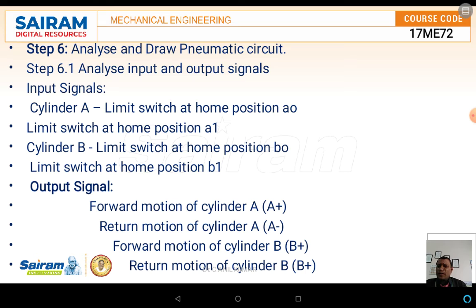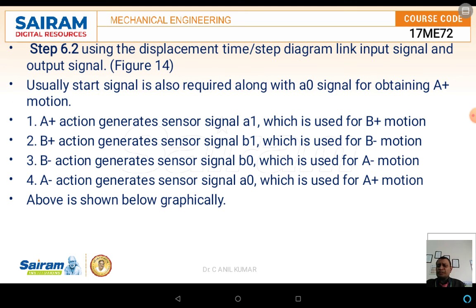The output signals are as follows: the forward motion of cylinder A is represented by A+, the return motion by A−, the forward motion of cylinder B by B+, and the return motion by B−. By linking the displacement time diagram and the displacement step diagram, we can relate the input signals and the output signals.